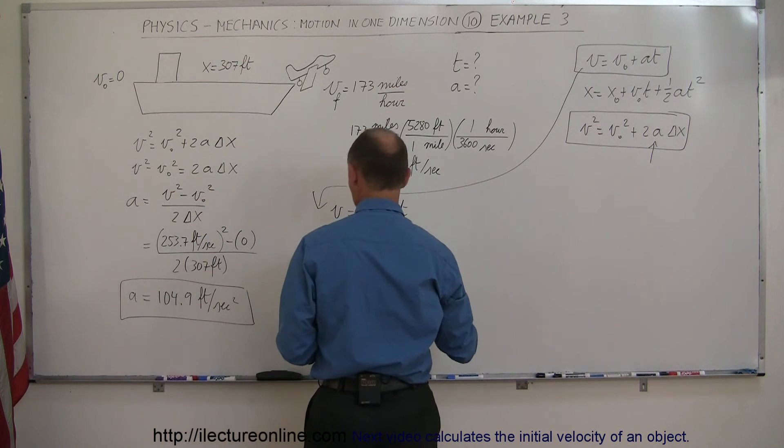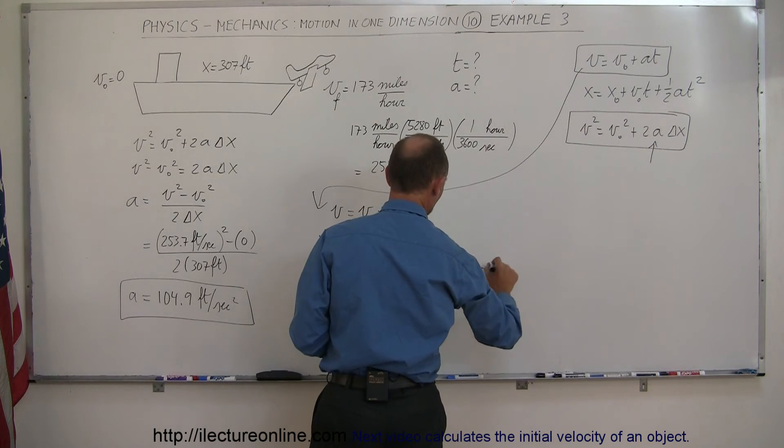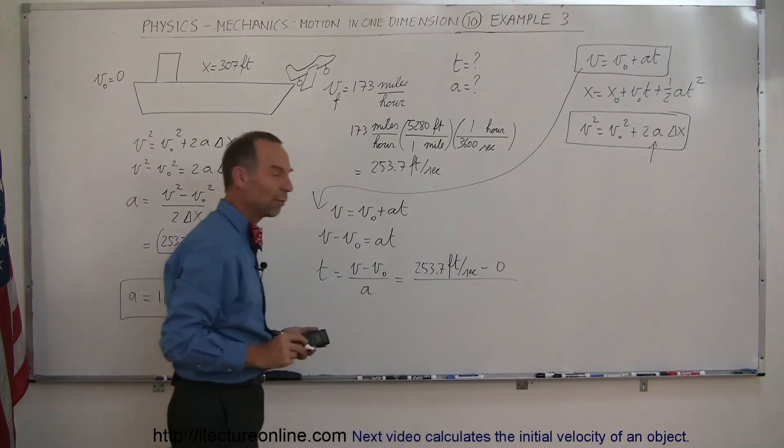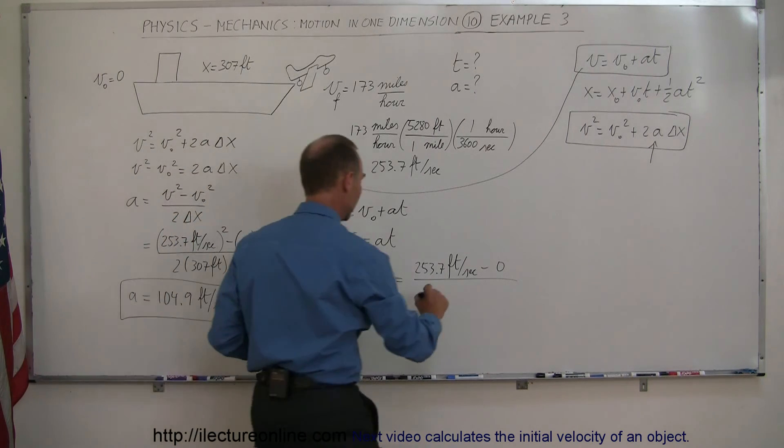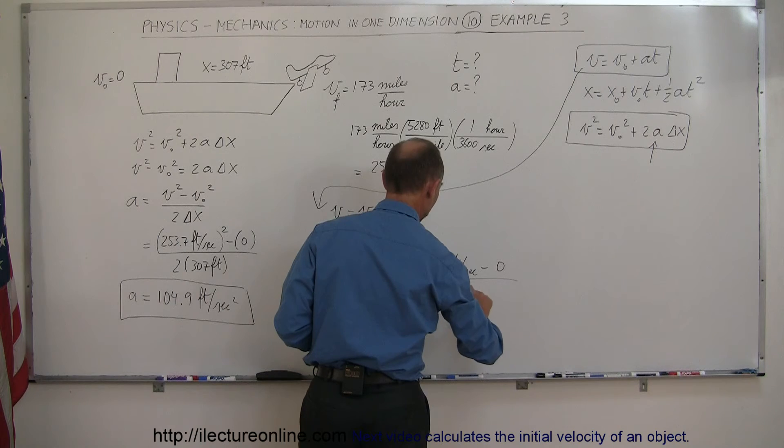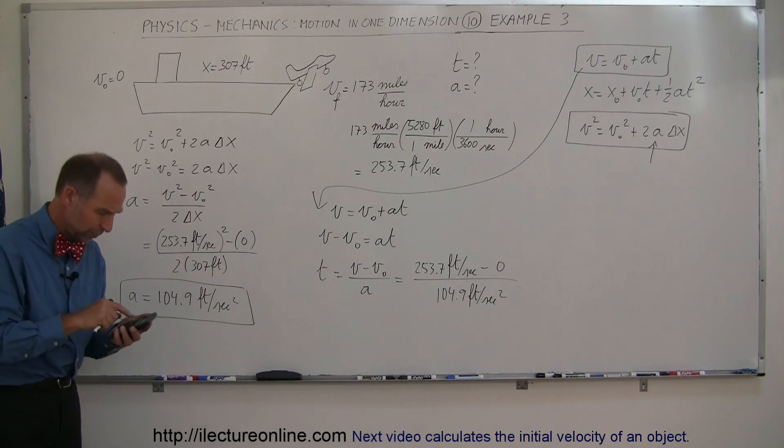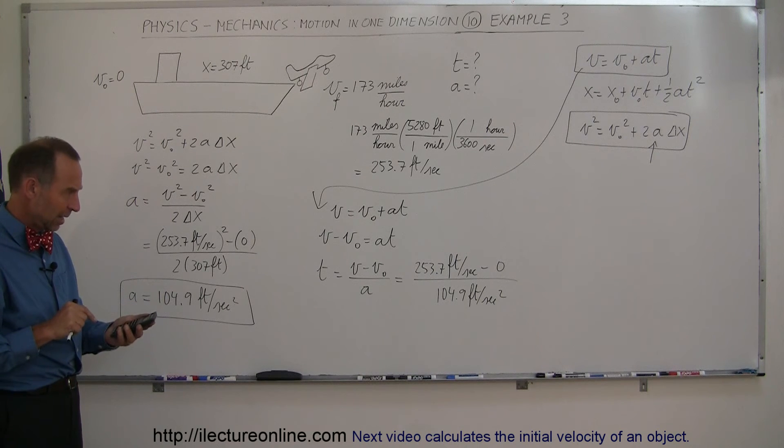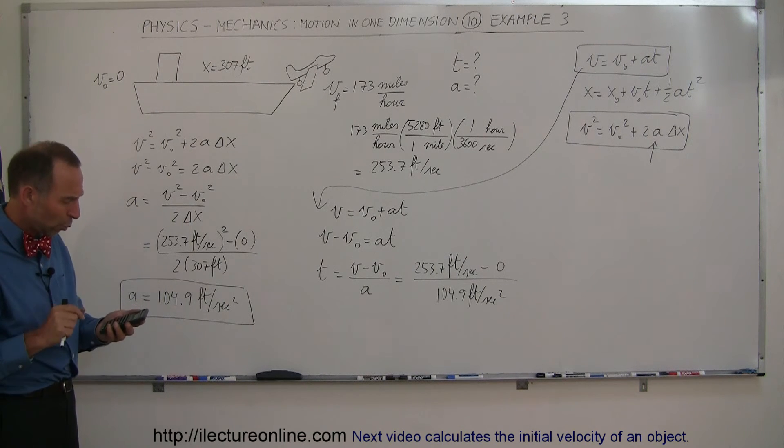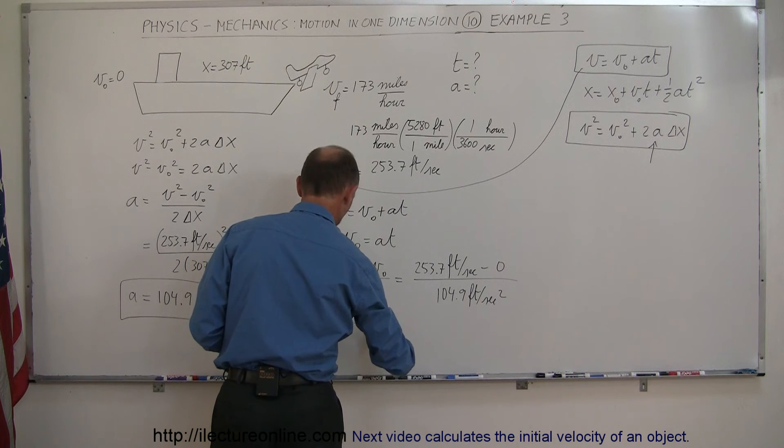Final velocity, 253.7 feet per second. Initial velocity is zero. Let me move over here so you can see what I just wrote. Now we divide by the acceleration, which we found to be 104.9 feet per second squared. Let's find out what that is equal to. So we take the inverse of that times 253.7, and it is 2.42 seconds. So in just about two and a half seconds, that airplane takes off from the aircraft carrier.